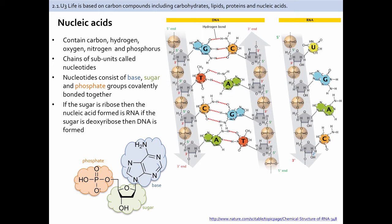Nucleic acids are the fourth class of organic molecules you should be familiar with. These contain carbon, hydrogen, oxygen, nitrogen, and phosphorus. The monomers of these molecules are called nucleotides, and they consist of a nitrogen base, a five-carbon sugar — either ribose or deoxyribose — and a phosphate group that are covalently bound together. If the sugar is ribose, then it's RNA; if the sugar is deoxyribose, then DNA is the nucleic acid that's formed.